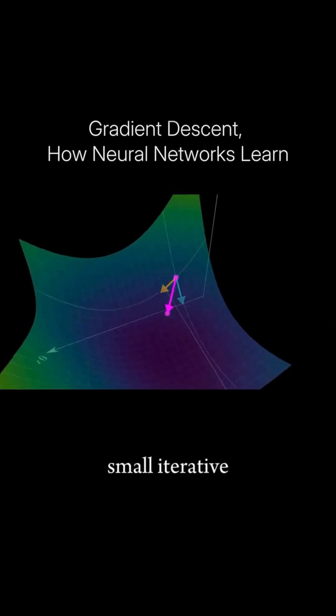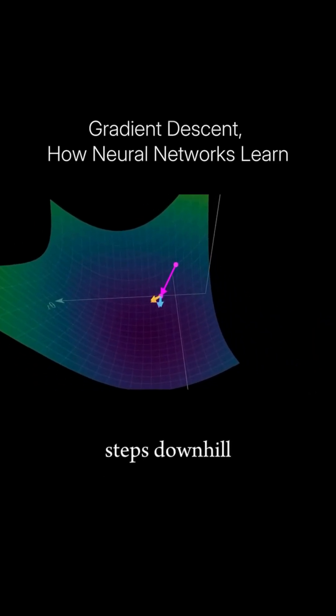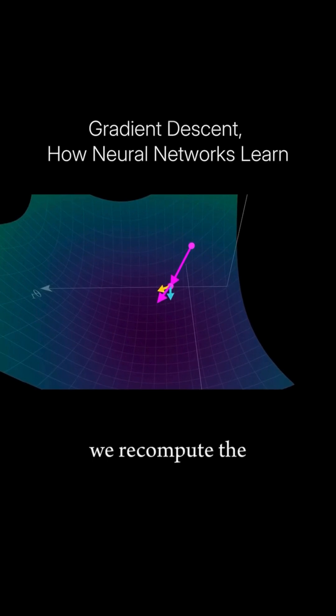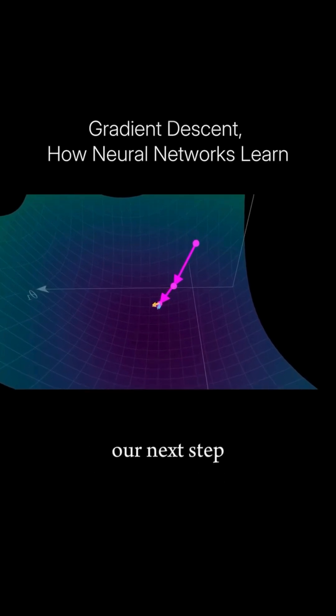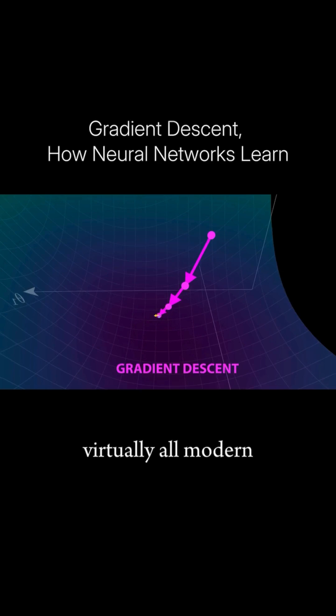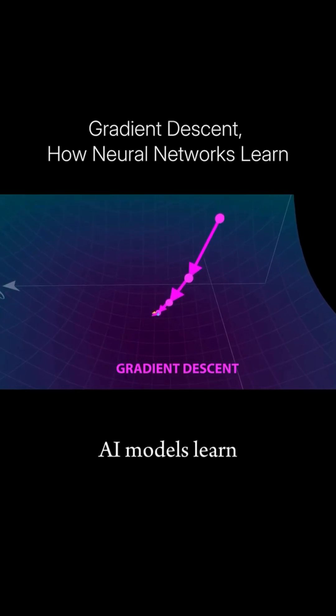The idea now is to take small iterative steps downhill, where after each step we recompute the gradient to guide our next step. This is known as gradient descent, and is how virtually all modern AI models learn.